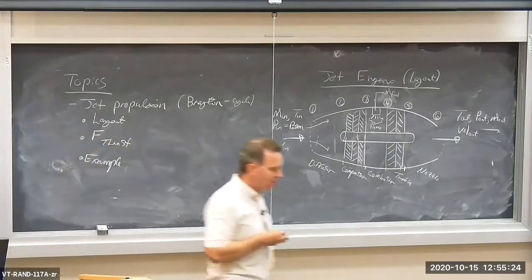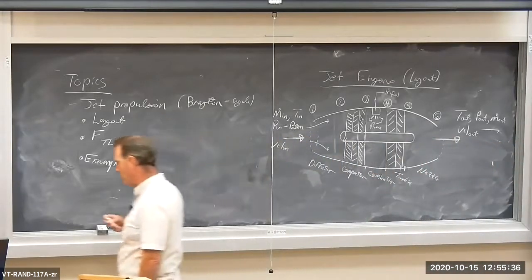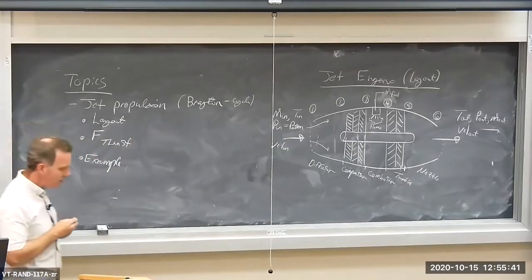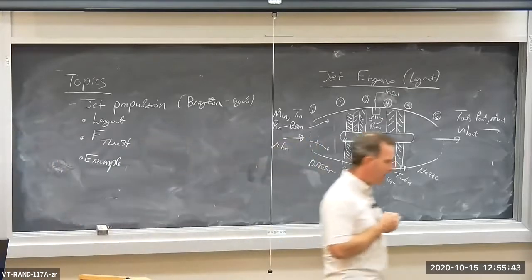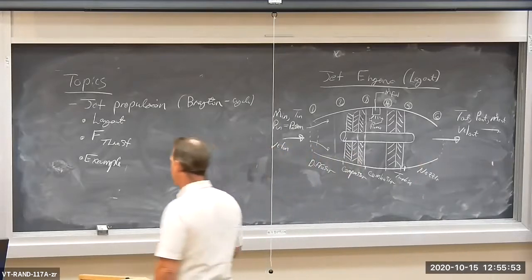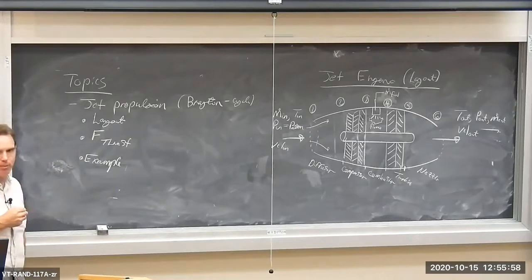We'll look at a Brayton cycle-based jet engine used in jets. Turbo jets are used in some applications — most are turbo fans that involve some shaft power — but we're going to look at a turbo jet today, which is a device that doesn't produce any shaft power but only produces thrust. We'll talk about the layout of a jet engine, calculating the thrust it produces, and then we'll do an example.